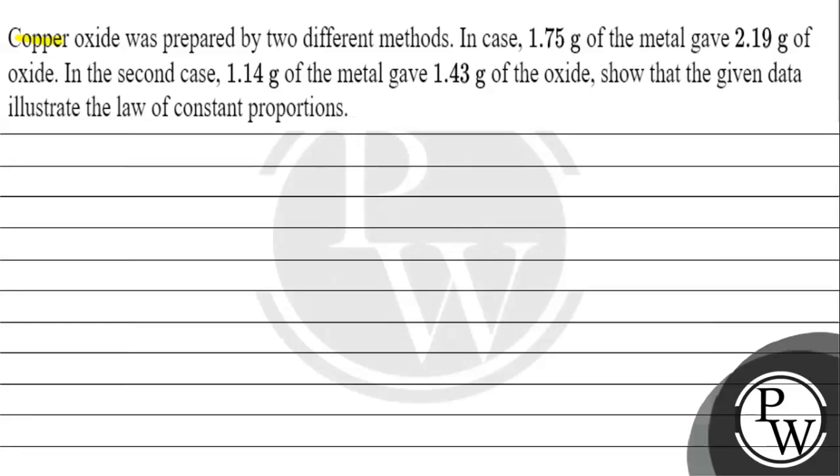Hello Bacho, let's read this question. Question says, Copper Oxide was prepared by two different methods. In case 1, 1.75 gram of metal gave 2.19 gram of oxide. In case 2, 1.14 gram of metal gave 1.43 gram of oxide. Show that the given data illustrates the Law of Constant Proportion.